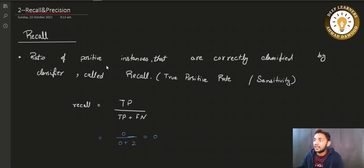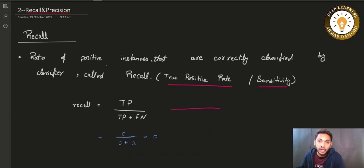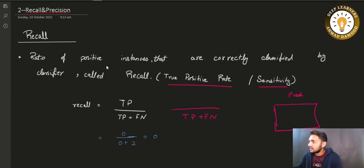Recall is also sometimes called true positive rate, and sometimes sensitivity — people use these terms interchangeably. Out of all the positive instances you have in your data — true positive and false negative — if you look at your confusion matrix, predictions are on one axis and actual values on the other axis. These together represent all the positive instances in our data.